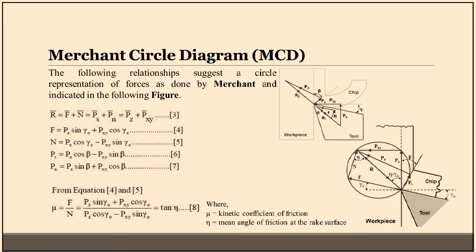Equation four: F is equal to Px sine gamma naught plus Pxy cos gamma naught. Equation five: N is equal to Pz cos gamma naught minus Pxy sin gamma naught. Equation six: Ps is equal to Pz cos beta minus Pxy sin beta. Equation seven: Pn is equal to Pz sin beta plus Pxy cos beta. From equations four and five, we can write viscosity or mu is equal to F by N, which equals Pz sin gamma naught plus Pxy cos gamma naught divided by Pz cos gamma naught minus Pxy sin gamma naught, and is equal to tan eta.